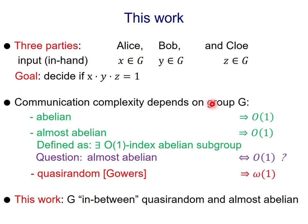Now, the communication complexity here depends on the group G. If the group is abelian, then it can be shown that the communication is constant. This result can be generalized to the case in which the group is almost abelian, defined to mean that the group has an abelian subgroup of constant index. A question that I want to highlight is whether this implication can be reversed. Is it true that the communication is constant if and only if the group is almost abelian? We don't know how to prove it, and it's an interesting question.